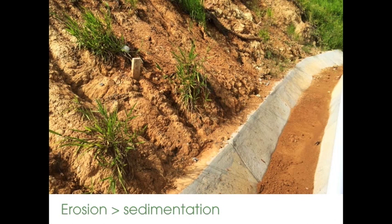It is more cost and time effective to stabilize soils and control erosion before setting up sedimentation measures. As we can see in the photo, if the slopes were vegetated and bare soils had been stabilized, there wouldn't be sediment in the culvert which now needs to be controlled. However, for the best results, both erosion and sedimentation controls should be used in combination for all projects.